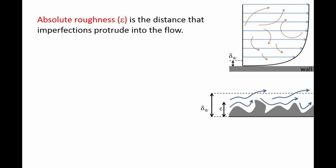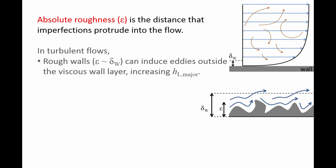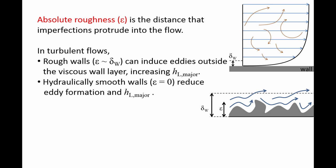The roughness disturbs the flow inside the viscous wall layer, and these disturbances can propagate outside the wall layer to the rest of the flow. In turbulent flows, any disturbance outside the viscous wall layer will tend to produce eddies. If the absolute roughness is similar in size to the viscous wall layer thickness, the wall will enhance eddy formation and increase major losses. Hydraulically smooth walls disturb the flow much less, thereby reducing eddy formation and lowering major losses. For laminar flows, any disturbance outside the viscous wall layer will tend to be tamped down, preventing eddies from forming. As a result, the roughness does not impact major losses for laminar flows.